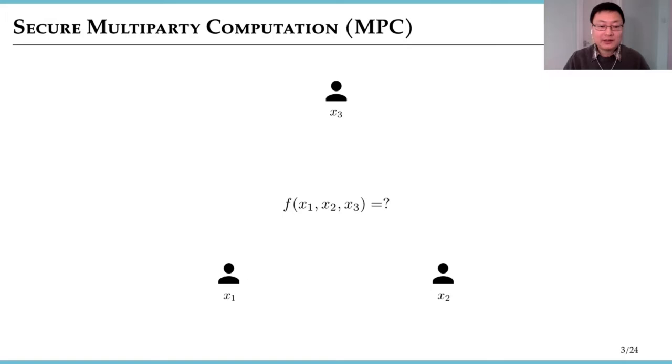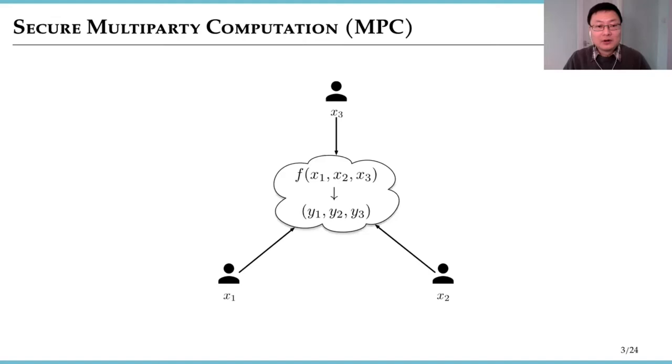This seems to be an impossible task, but with MPC this becomes possible. What the parties can do is they run a cryptographic protocol. In the protocol they exchange encrypted messages, and the function f gets evaluated blindly over all their inputs to produce the output. At the end of the protocol, each party gets an output and nothing else.